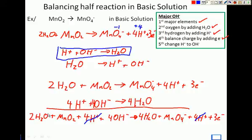And we also see this too. We have two waters on this side, and that can cancel out with two of these waters. And then we get our net equation.